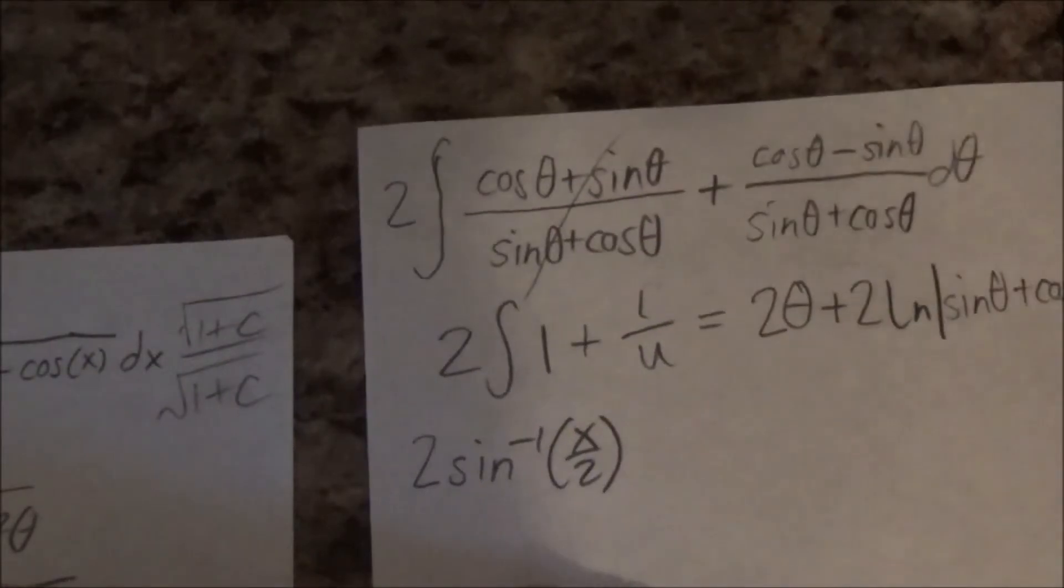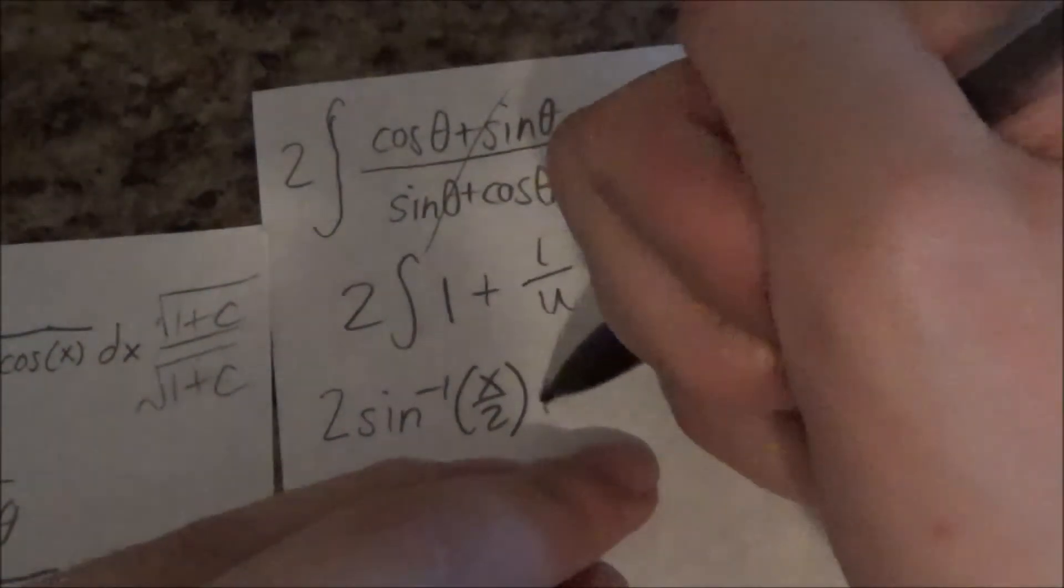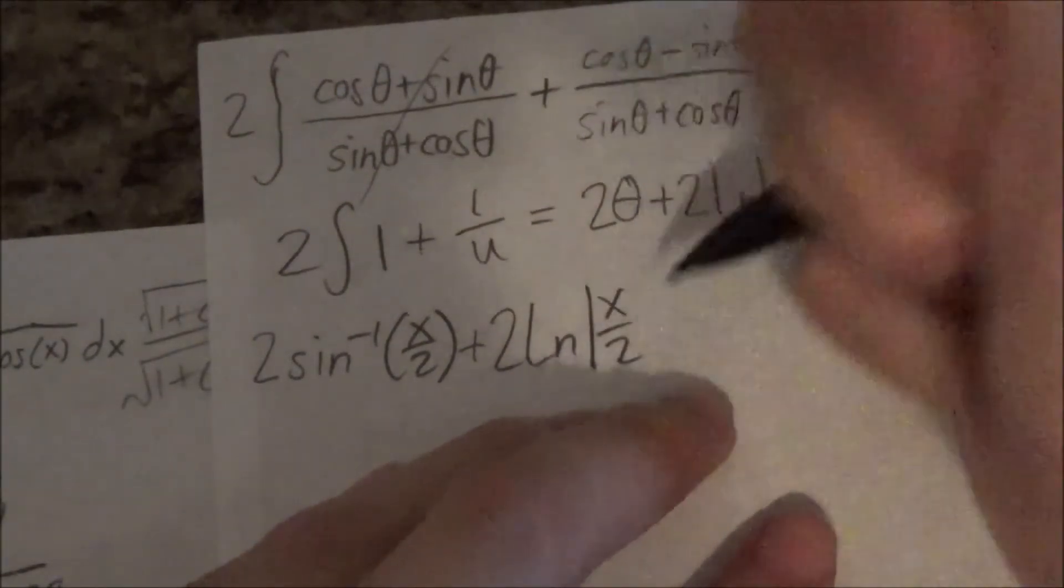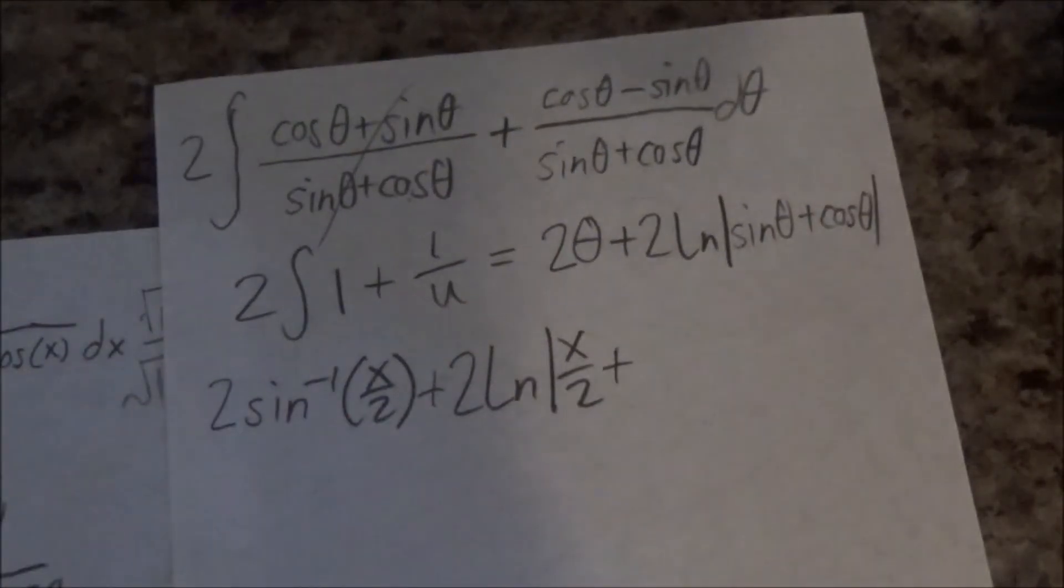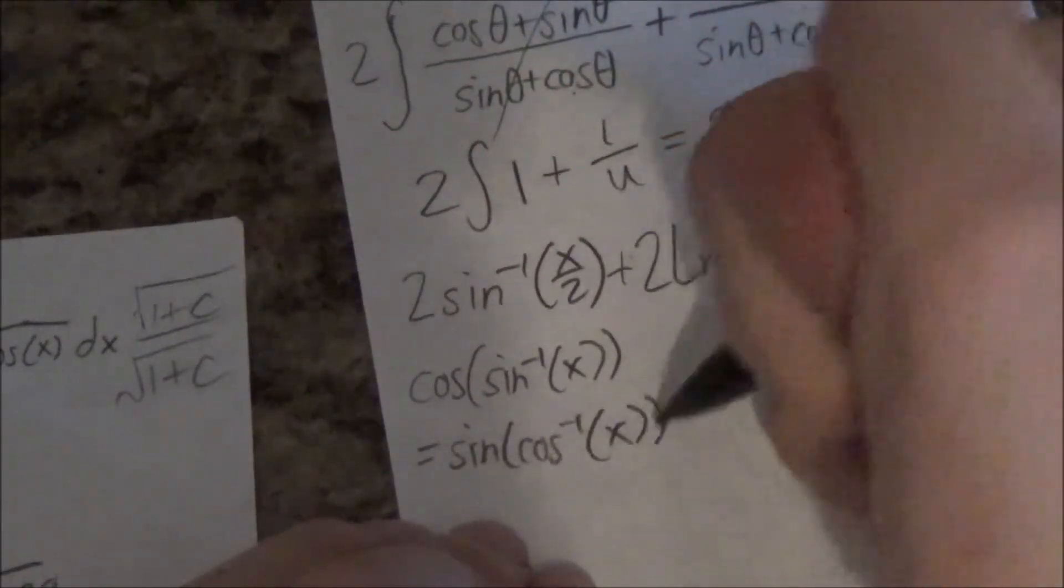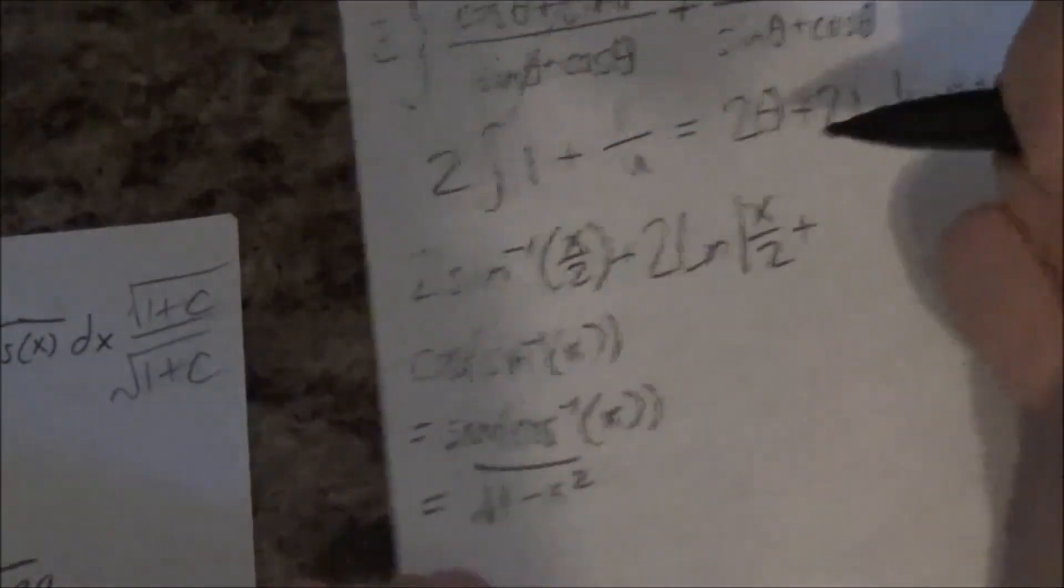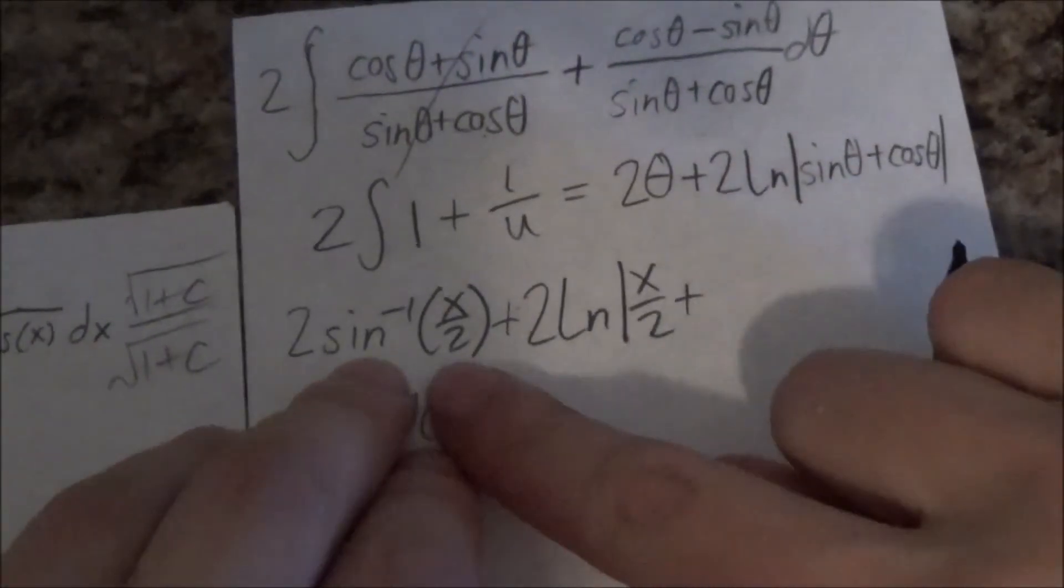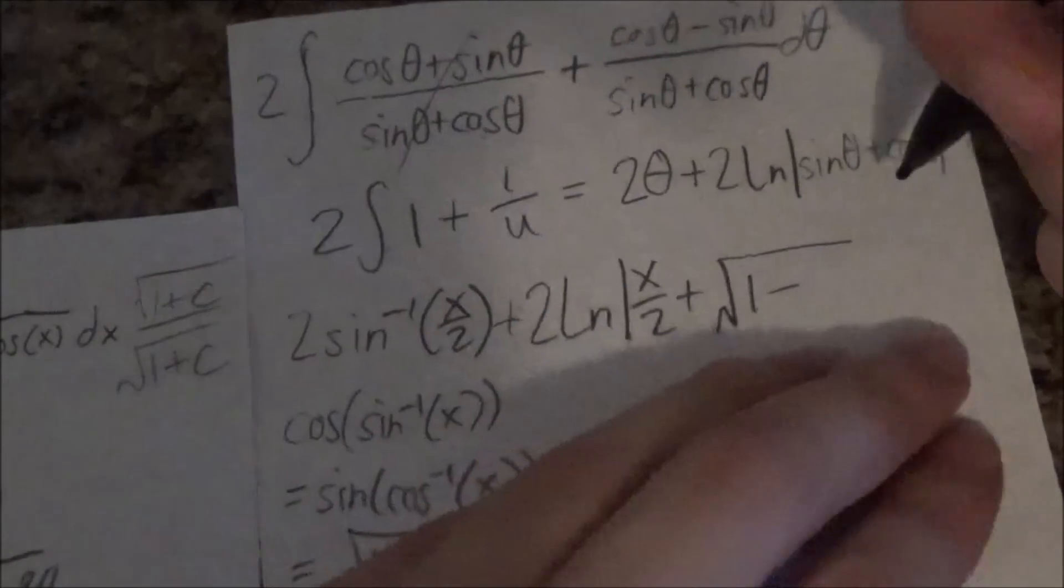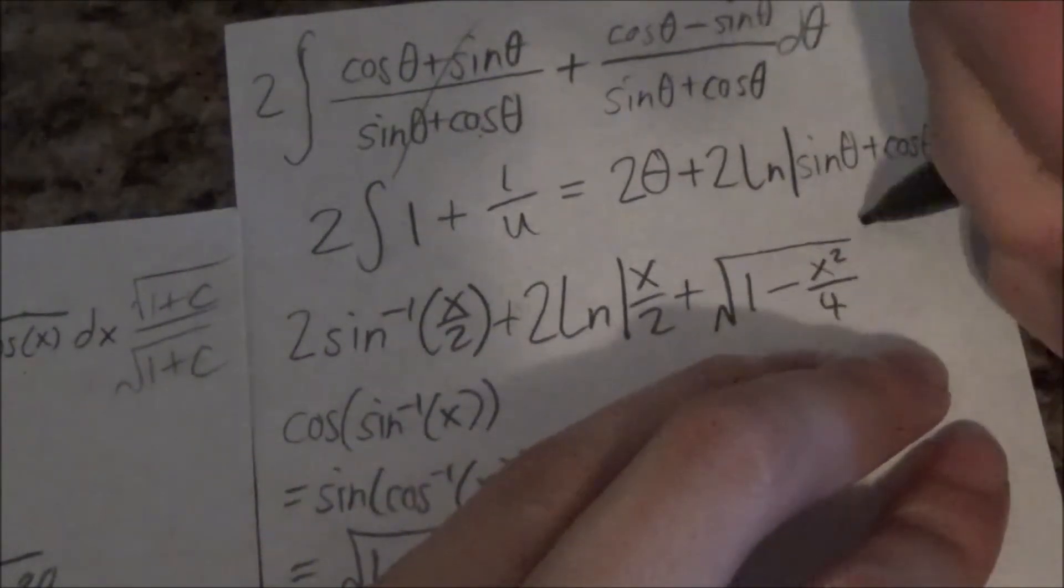So yeah that's theta, theta, inverse sine of x plus 2. Conveniently. Plus 2 ln of, well sine theta. Sine theta is right here. So sine theta is x over 2. So it's x over 2. And then, and then plus cosine theta. Cosine of inverse sine of x is equal to sine of cosine inverse of x. Just letting you guys know that both of these equal 1 minus x squared. So if I do cosine of inverse sine of x over 2, that's pretty much 1 over 1 minus x squared. So this is x squared over 4. Plus c.